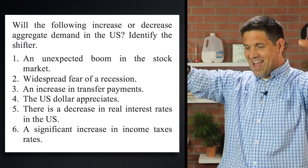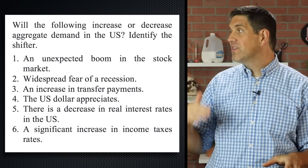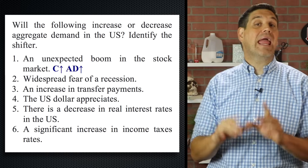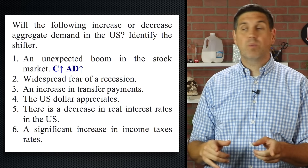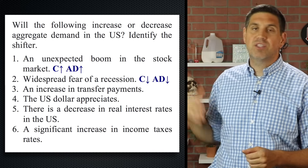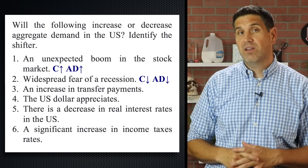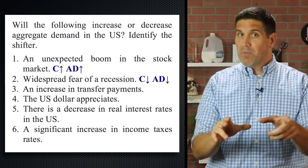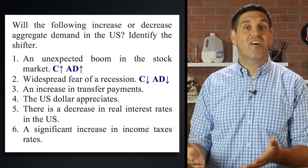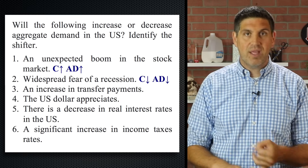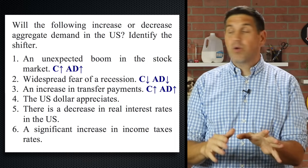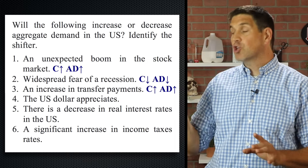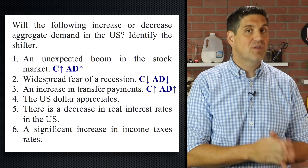It's graphing time! I started with an easy one — a boom in the stock market is going to increase aggregate demand because that's going to increase consumer spending. And widespread fear of a recession would decrease consumer confidence, decrease consumer spending, and decrease aggregate demand. Those ones were pretty easy, but the third one is a little trickier. Remember that transfer payments are payments by the government to individuals for things like social security or unemployment. This will increase aggregate demand, but this is not government spending — transfer payments do not count in GDP.